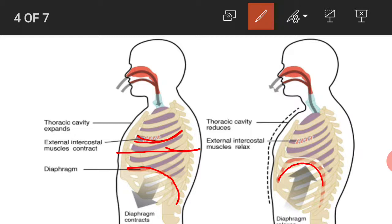After the exchange of gases in the alveoli, the air which is rich in carbon dioxide is expelled out. In exhalation, the intercostal muscles relax, bringing the ribs back to their original position. The diaphragm muscles also relax and it regains its dome shape.